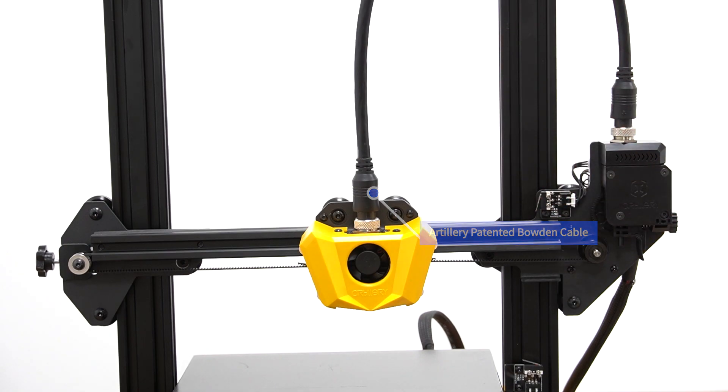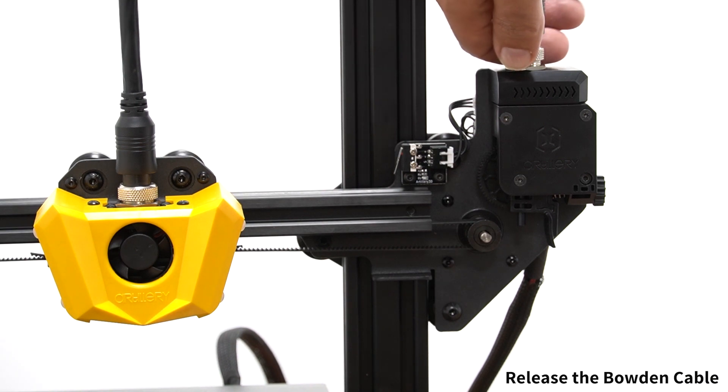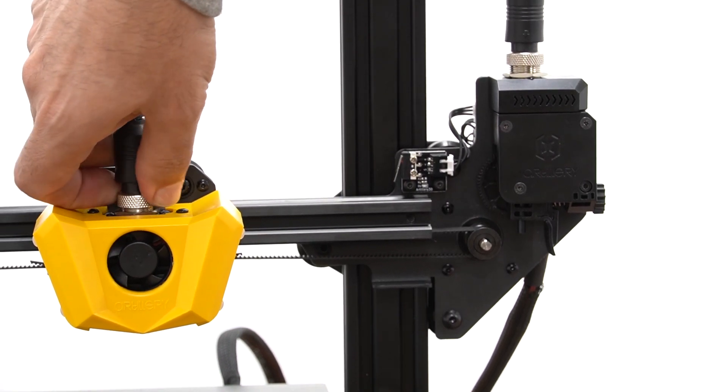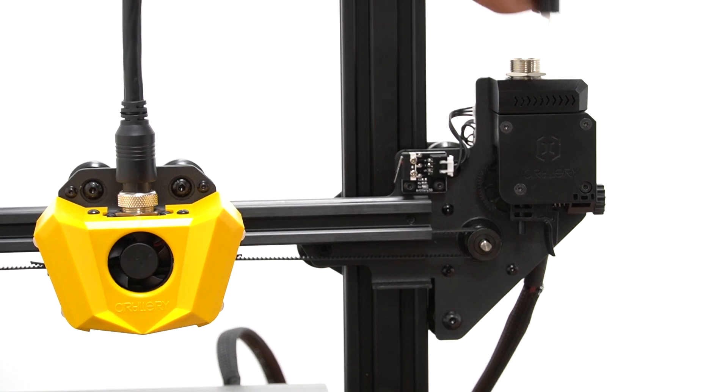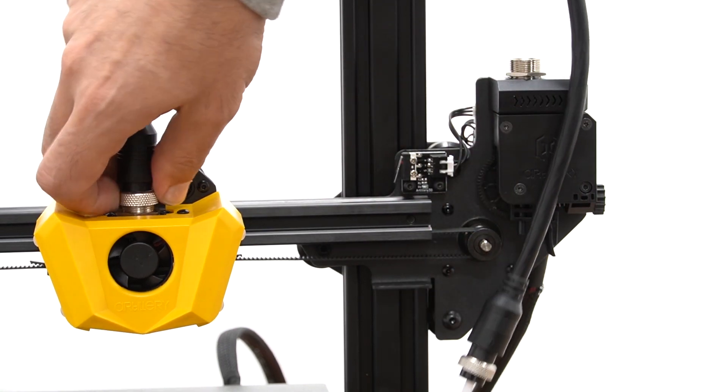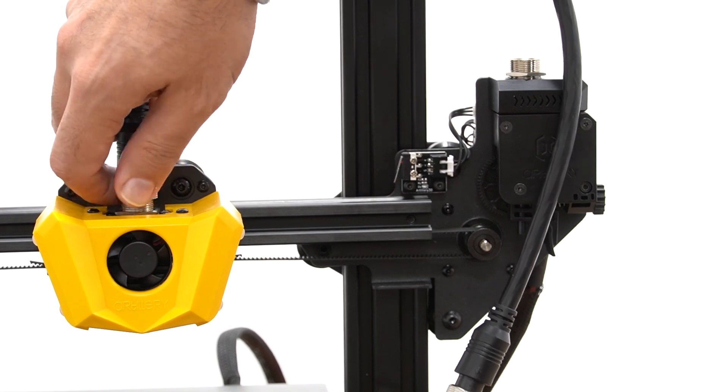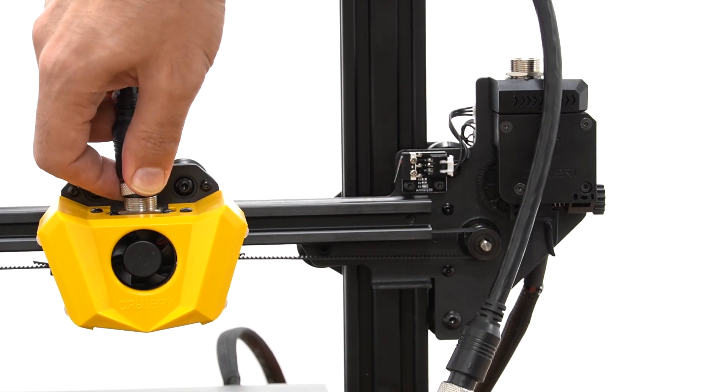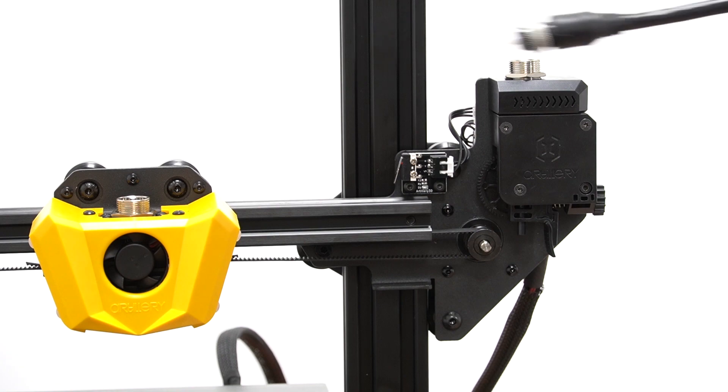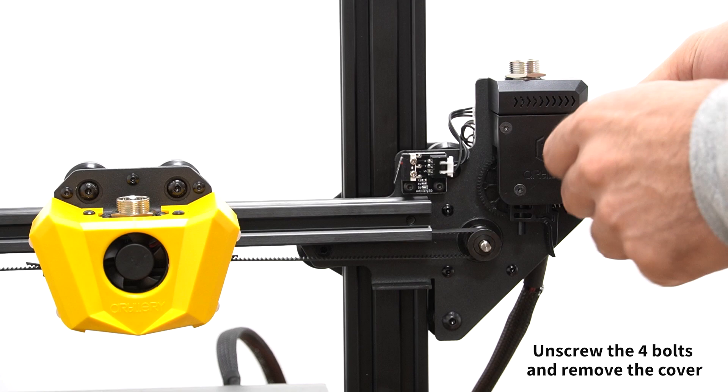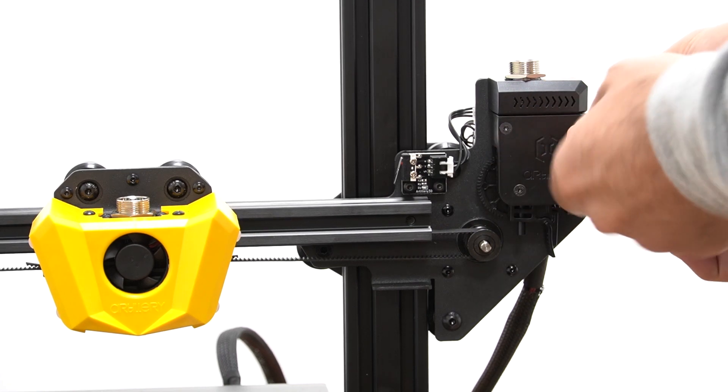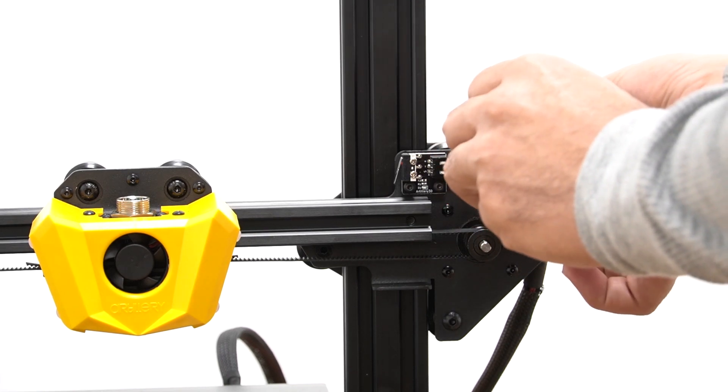So first of all, I'm going to remove the filament tube right at the top of the extruder and the hot end, and then remove the four bolts on the cover of the extruder. I'm going to try to unscrew and remove them, and then remove the cover.